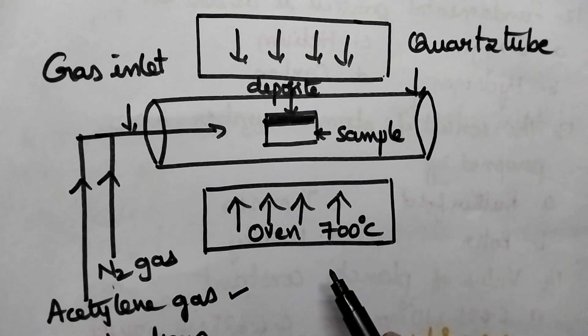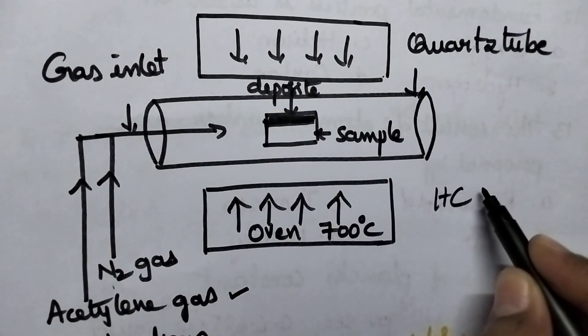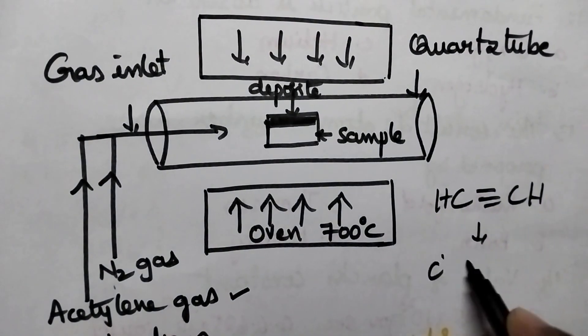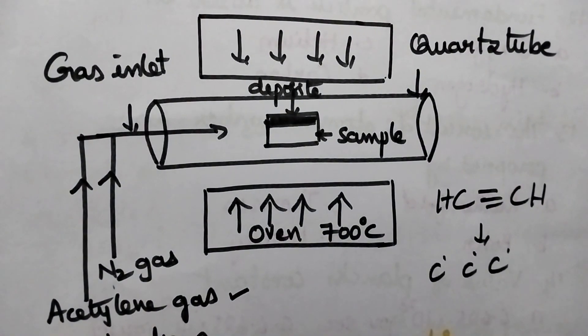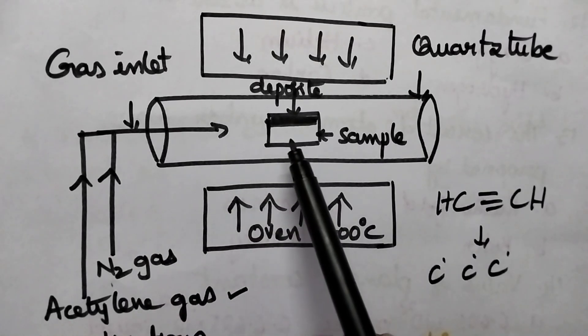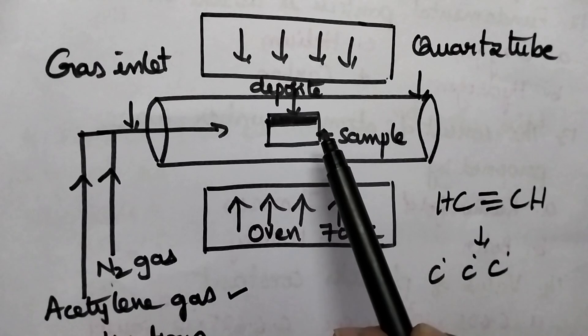Because of the high temperatures maintained in the quartz tube, this acetylene gas undergoes cleavage and results in the formation of carbon particles having nano dimensions. Slowly, these soot particles get deposited on the sample as the deposit.